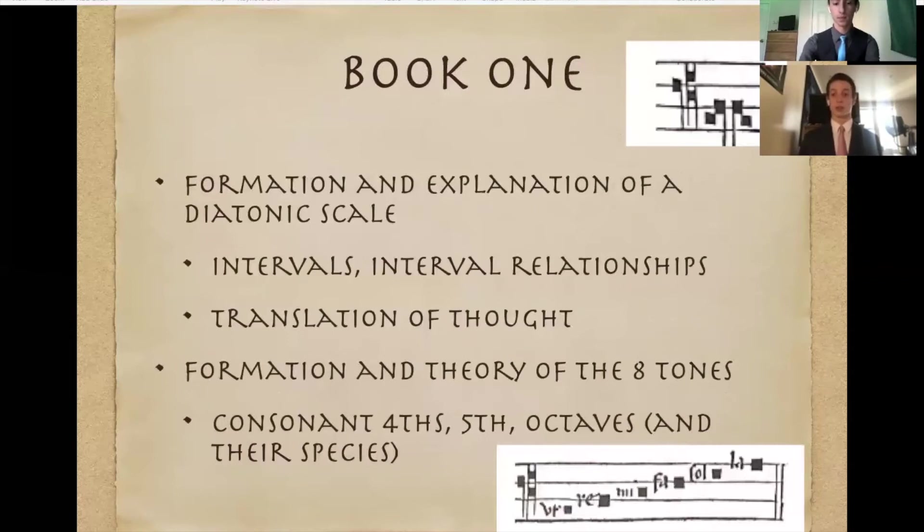So book one talks about two main topics. Firstly, we have the formation and explanation of a diatonic scale through intervals and interval relationships. As you can see in the top right hand corner, we have two notes displayed by Ut and Re. This explains a relationship of whole steps and half steps, or whole tones and semitones. And it is the same distance up as it is down, which was used to help the singer understand how the notes fit together.